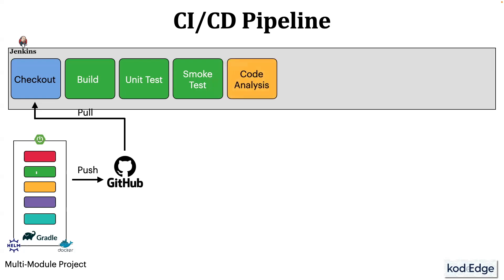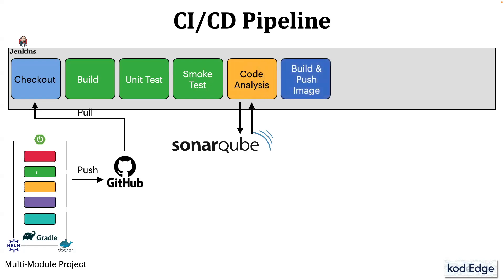Next stage will be the code analysis stage, where we will use SonarQube for code quality analysis. Following this, the build and push image stage will create a Docker image of our application and will push it into Docker Hub.